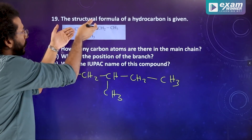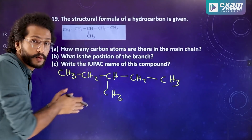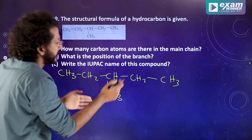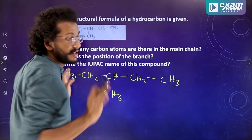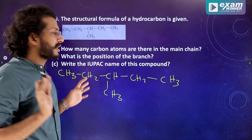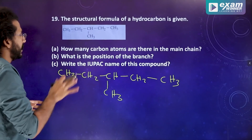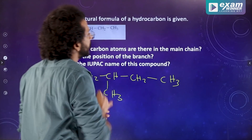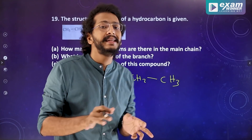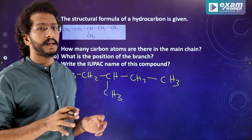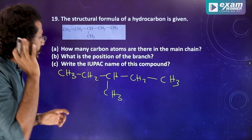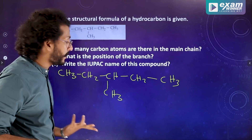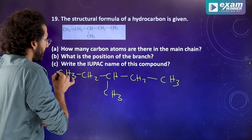The structural formula is CH3-CH2-CH3 with a branch CH2-CH3. The question asks how many carbon atoms are in the main chain. We need to identify the main chain with the maximum number of carbons.